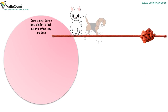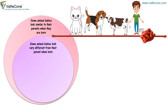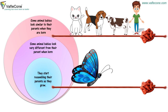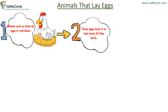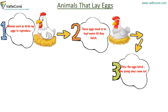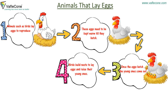Some animal babies look similar to their parents when they are born. Some animal babies look very different from their parents when born and start resembling their parents as they grow. Animals such as birds lay eggs to reproduce. These eggs need to be kept warm till they hatch, and once the eggs hatch, the young ones come out.